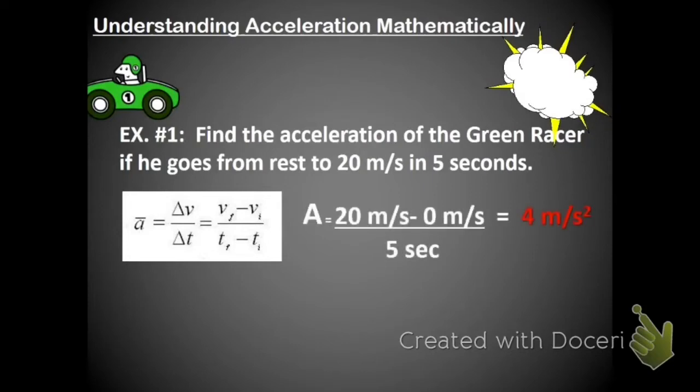His final speed is 20 meters per second, and his starting speed is 0 meters per second. The way I knew that was that it says from rest, and from rest means not moving, 0 meters per second. Then I'm going to divide it by the time, which in this case they straight up tell us it's 5 seconds.